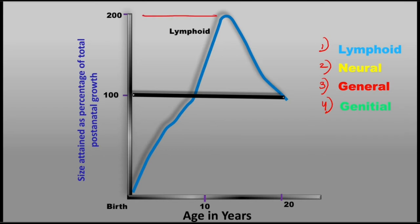Lymphoid tissue grows to 200% by the age of 11 to 13 years, and then it regresses. By adulthood, around 18 years of age, it undergoes involution to reach the adult size — which is the 100% mark. It goes beyond 100% because children are more prone to infections, and lymphoid tissue helps protect them against these infections.